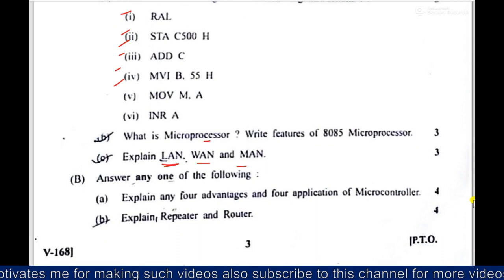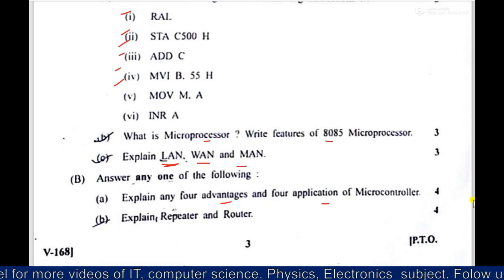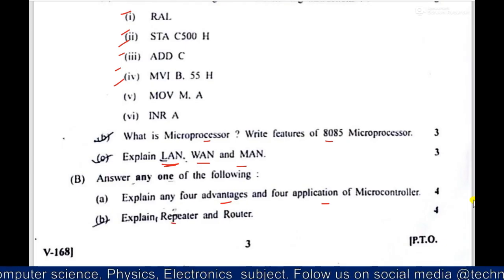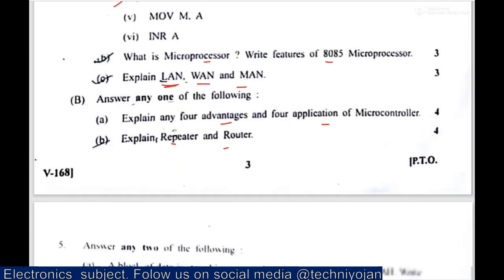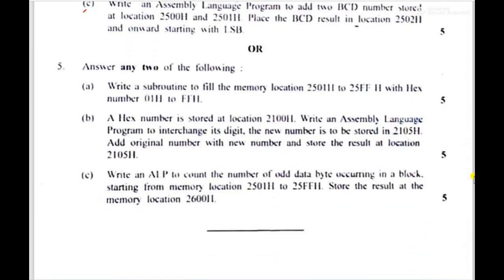Then microprocessor. What is microprocessor and features of this. Then four advantages of this applications of microcontroller. Then repeater router. Very easy and most important one. Then some scenarios of assembly language programming like stuff. So these are there. So any two you have to write from this. Or you can write any two from this. So here's sum up with this question paper.